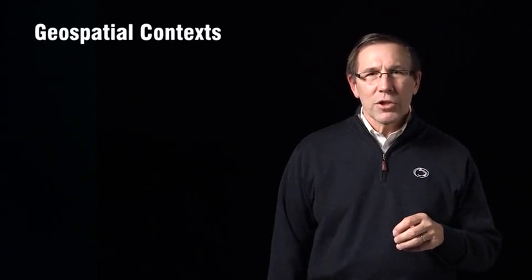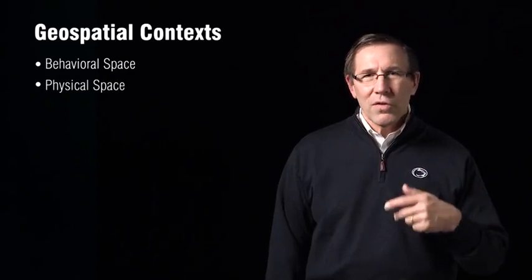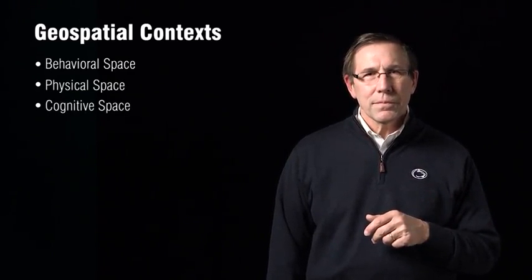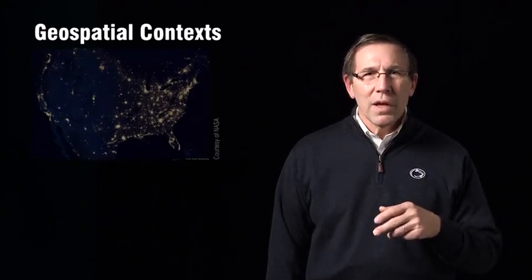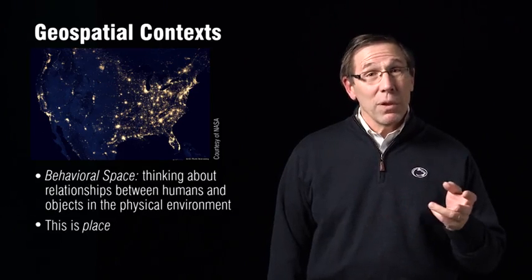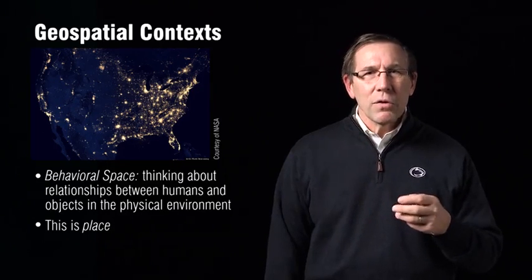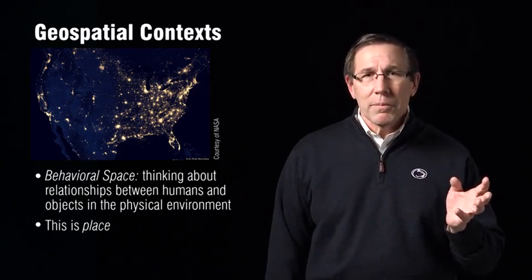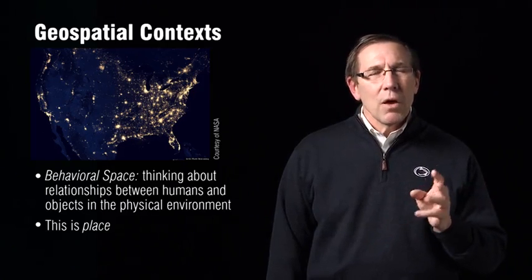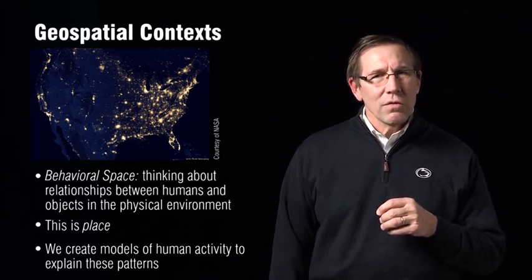There are three general geospatial contexts within which we put data in order to have the data-to-information translation. These include behavioral space, physical space, and cognitive space. Behavioral space is thinking about the relationship between the human and objects in the physical environment — this is place. It's exemplified by the image of the United States at night, which shows where humans live. We try to build models of this to explain these patterns, with some success, but it is difficult.